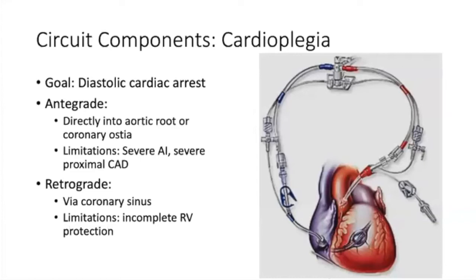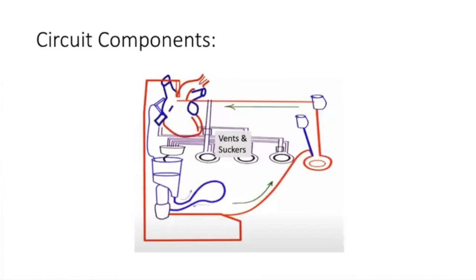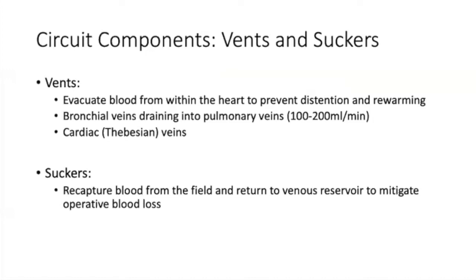The antegrade catheter typically sits in the aortic root; the retrograde catheter passes through the right atrium into the coronary sinus, placed by feel or with echocardiographic assistance. Vents and suckers are useful for recapturing operative blood loss and preventing distension of the heart. Vents evacuate blood from within the heart and prevent distension and rewarming — there is actually 100–200 cc/min returning from bronchial veins and thebesian veins draining directly into cardiac cavities, which can cause significant myocardial injury if the heart is left to distend. Suckers recapture operative blood loss back to the pump or cell saver.